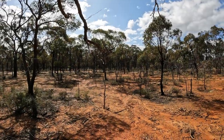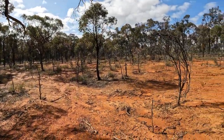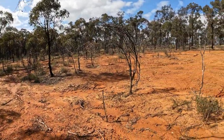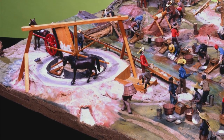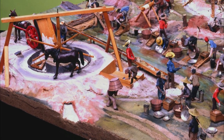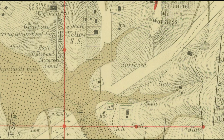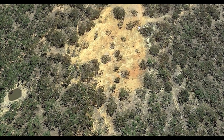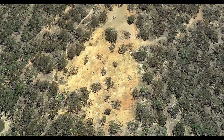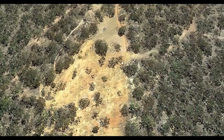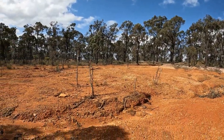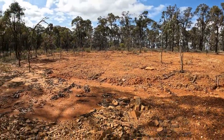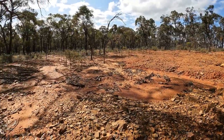Surfacing or paddicking is where miners stripped shallow gold-rich areas down to the bedrock by hand, and processed all the earth they removed using equipment such as gold puddlers and cradles. These areas are sometimes marked on old gold maps, and they are often easily spotted from above using Google Earth. These surfaced areas are of particular interest because they tell us there was gold here, and lots of it, and it wasn't very deep.